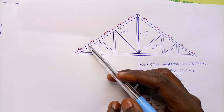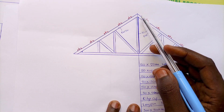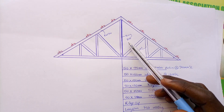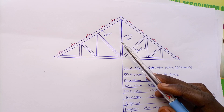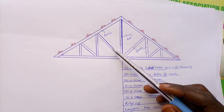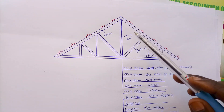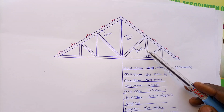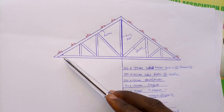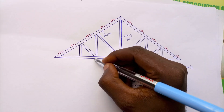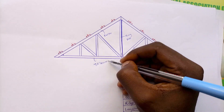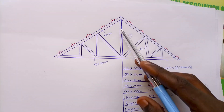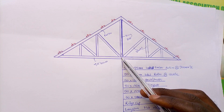Take note of this — this is your rafter. If you want to remember, write these component names and paste them near your bed; every morning you glance through them and you'll definitely learn them. You can't measure or calculate for these items without knowing them. So: king post, struts, tie beam, and rafter.